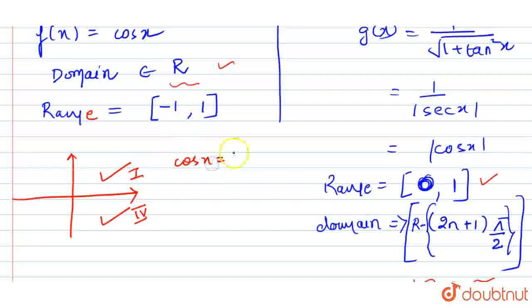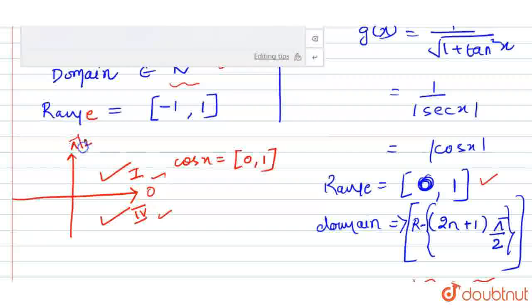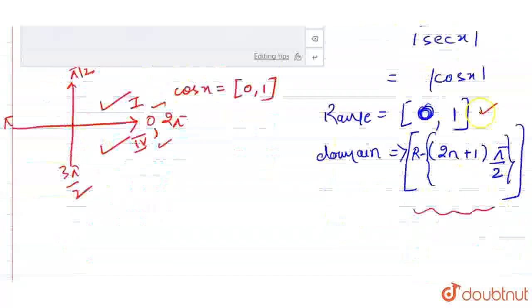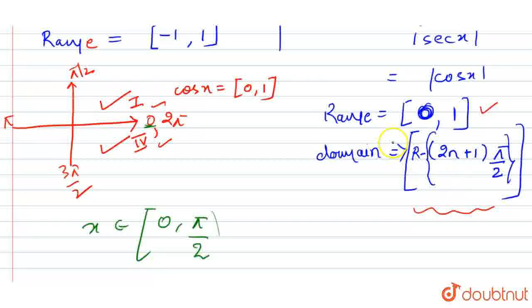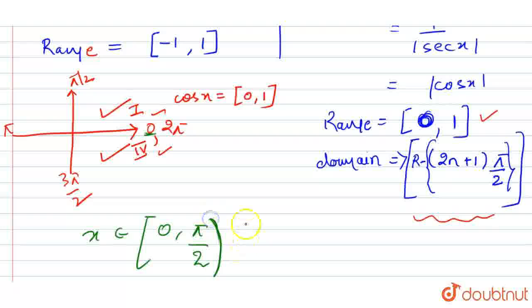Cos x will be between 0 to 1 only in the first and fourth quadrants. Writing the intervals for these quadrants: the first quadrant goes from 0 to pi by 2, and the fourth quadrant from 3 pi by 2 to 2 pi. So x could be between 0 to pi by 2, open bracket, union with the interval from 3 pi by 2 to 2 pi.